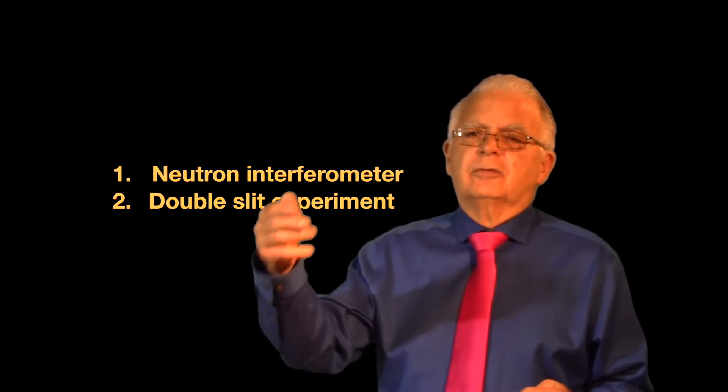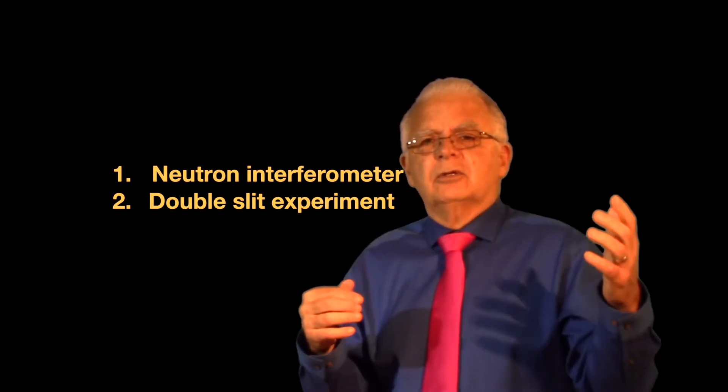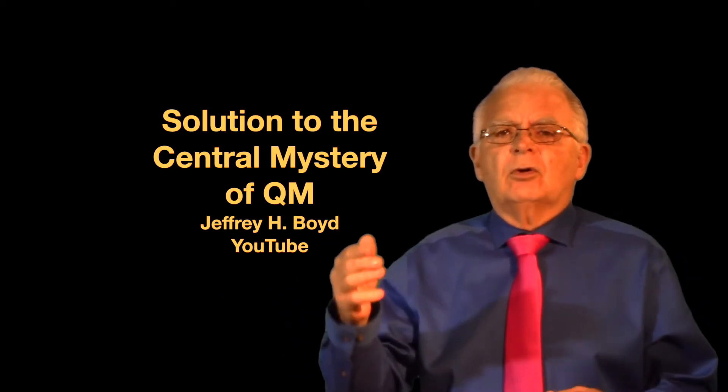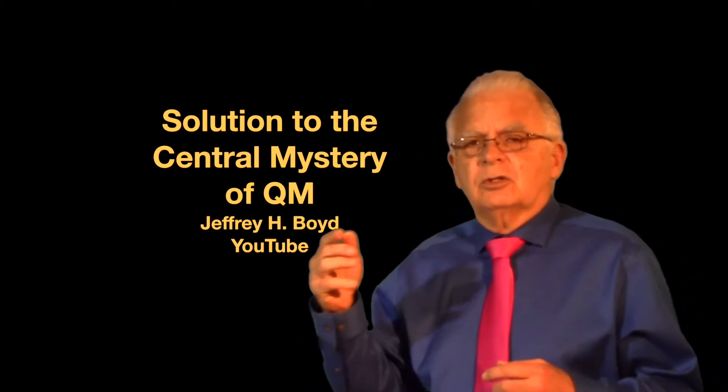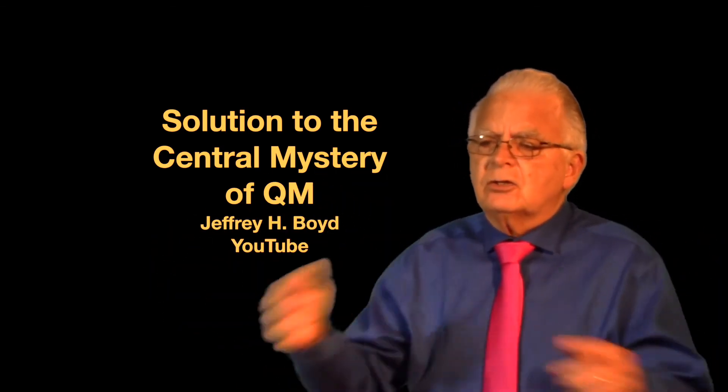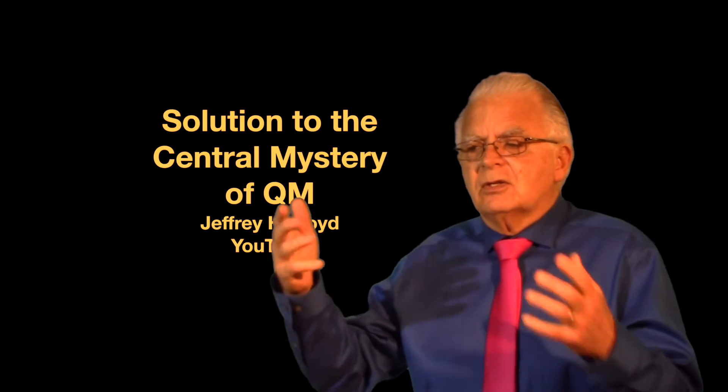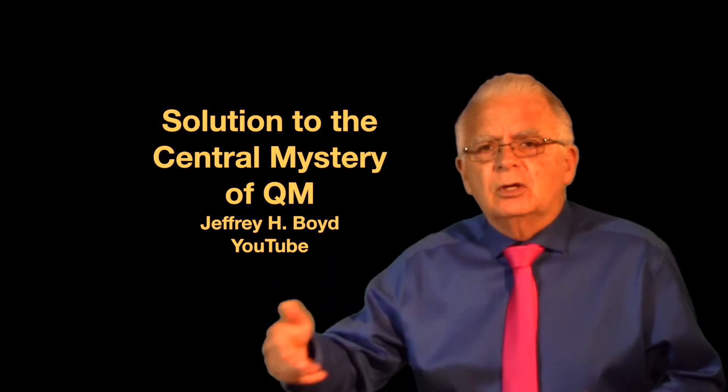One is a neutron interferometer experiment published by Kaiser et al., and the other is a double slit experiment. I'm not going to describe those experiments or show that quantum mechanics cannot explain them, but TEW can, because it is much better explained already on my YouTube video called Solution to the Central Mystery of Quantum Mechanics, a video which really explains the foundations of why we say that waves and particles go in different directions, and makes that assumption understandable.